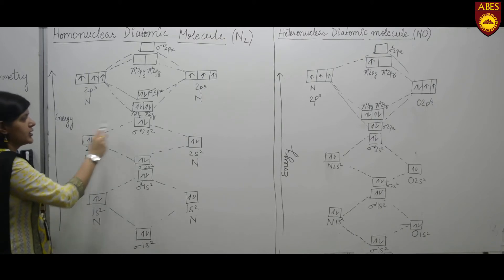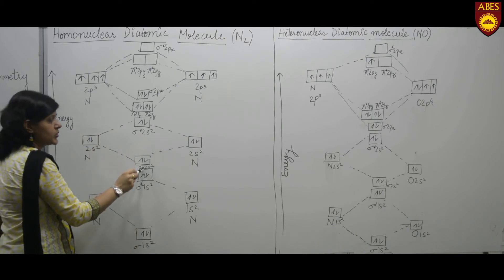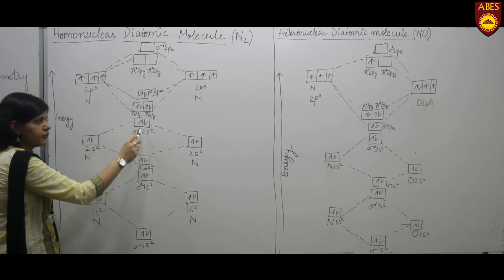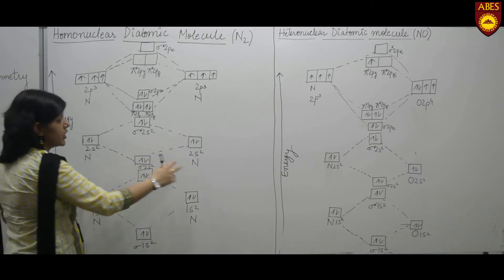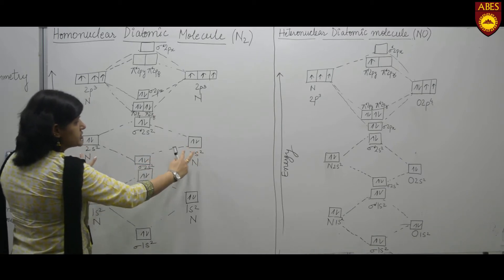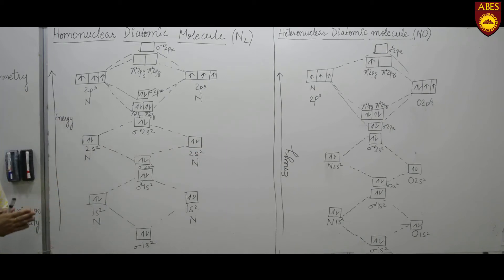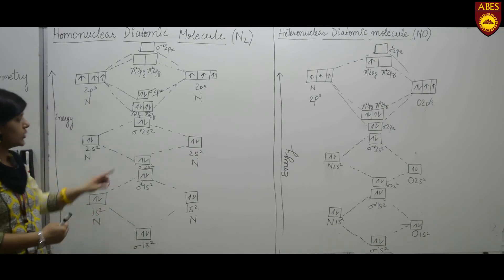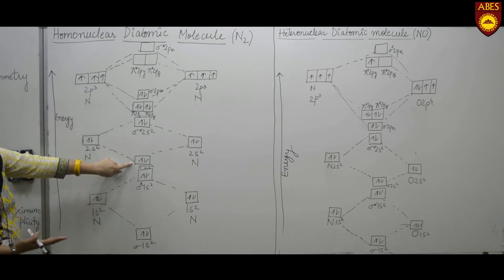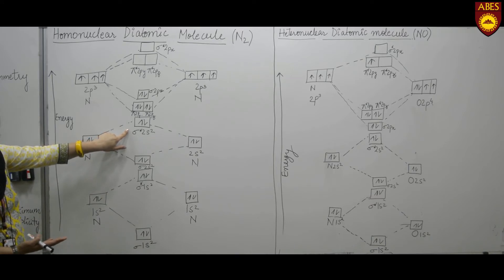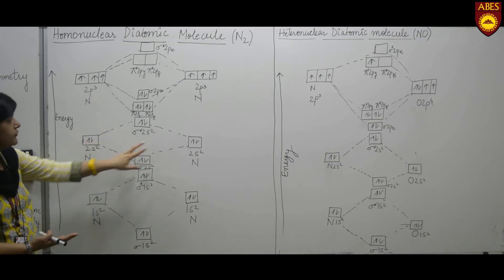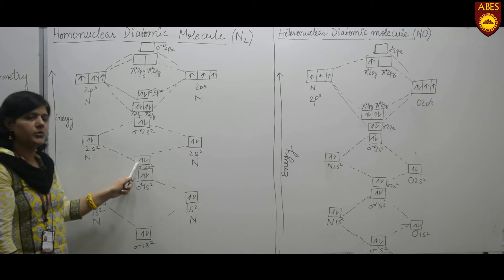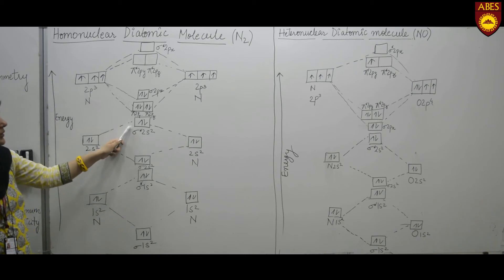Next is the formation of σ2s² and σ*2s² orbitals. For formation of these two molecular orbitals, two atomic orbitals of nitrogen combine on the basis of LCAO, resulting in two molecular orbitals: one bonding molecular orbital (BMO) and one anti-bonding counterpart (AMO). The four electrons get accommodated in these two orbitals — two in the BMO and two in the AMO.